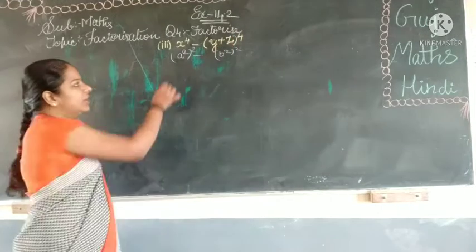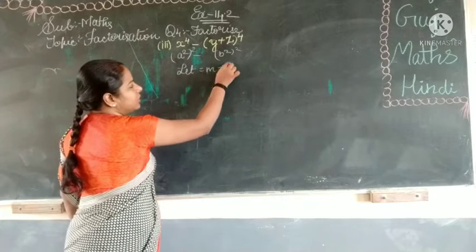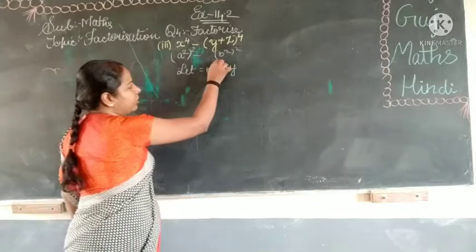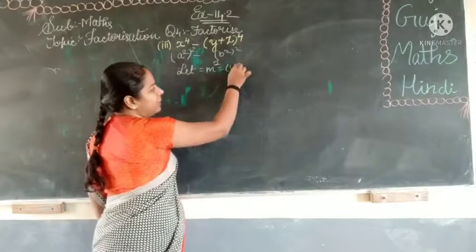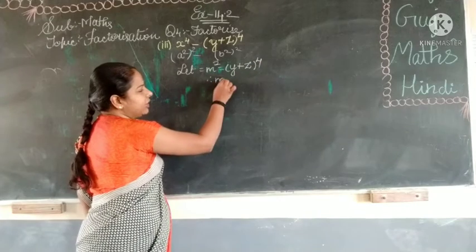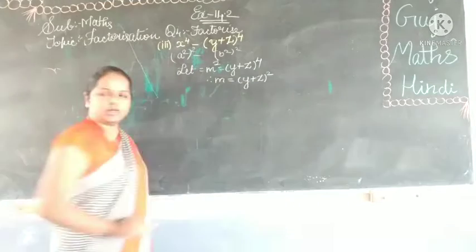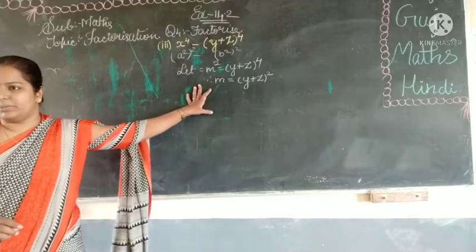What we are taking the value as m square? Let m to the power of m square is equal to y plus z to the power of 4. Therefore m ka value kitea hoga? y plus 2z square. You have to keep this in mind.